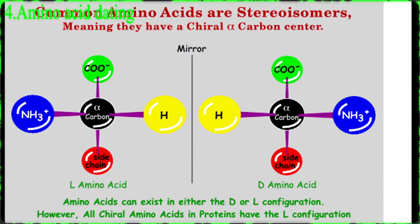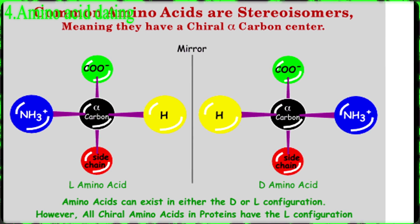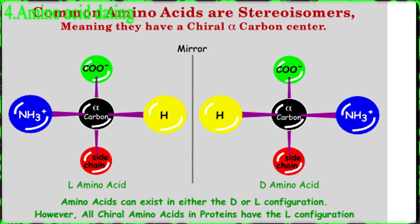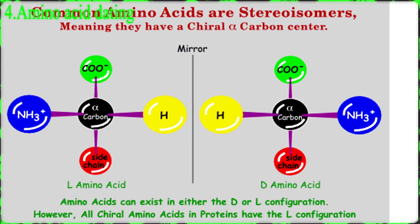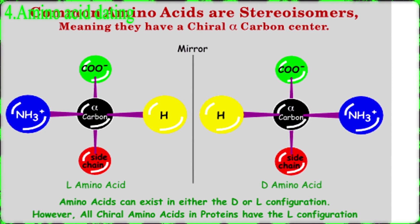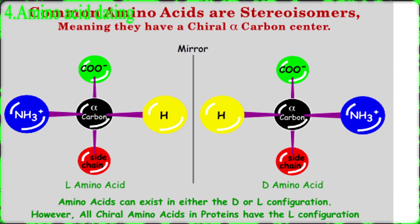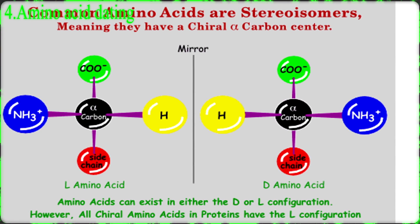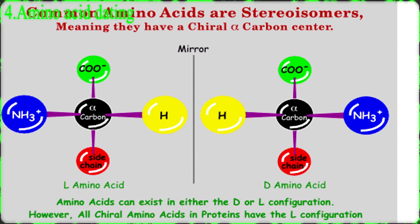What this means is that the amino acid can have two different configurations, known respectively as D and L, which are mirror images of each other. With a few exceptions, living organisms keep their amino acids in the L configuration.